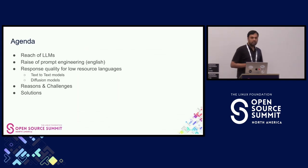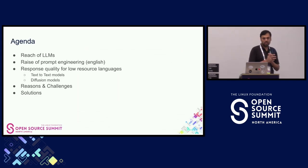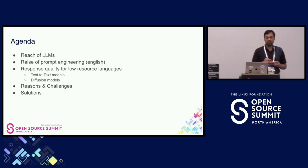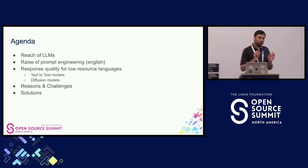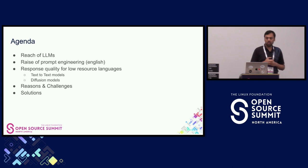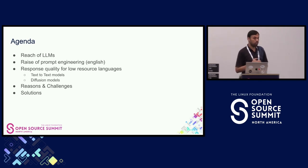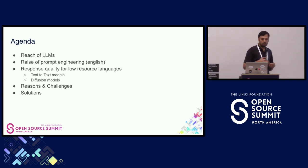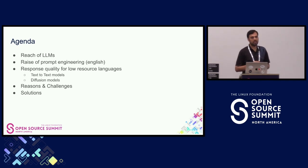The agenda for today's talk is: the reach of LLMs in terms of geographical reach; the reach of prompt engineering, specifically English-focused prompt engineering; cherry-picked examples of response quality because I want to show that response quality for prompts in low-resource languages is poor, especially for text-to-text models or diffusion models; the reasons why the quality is poor; and finally, some solutions.